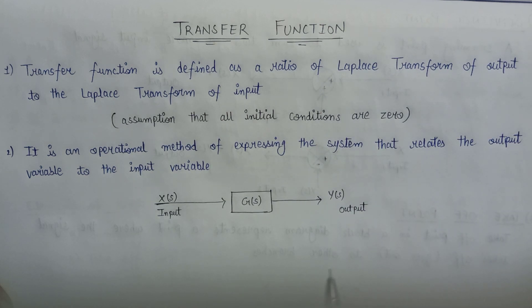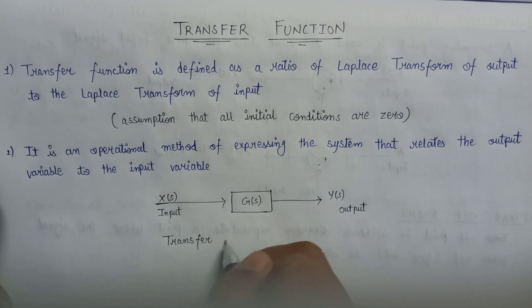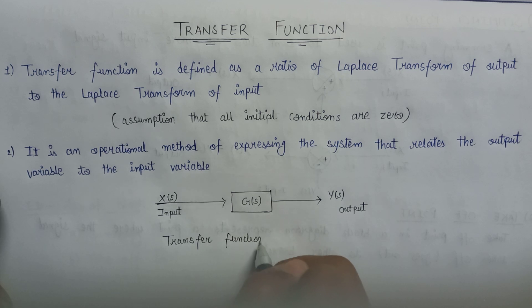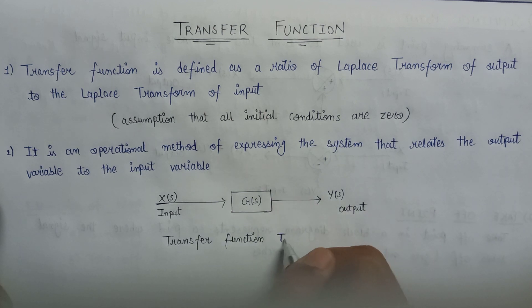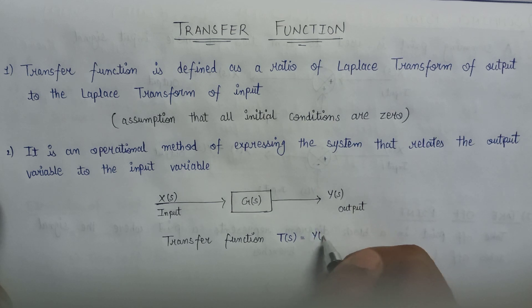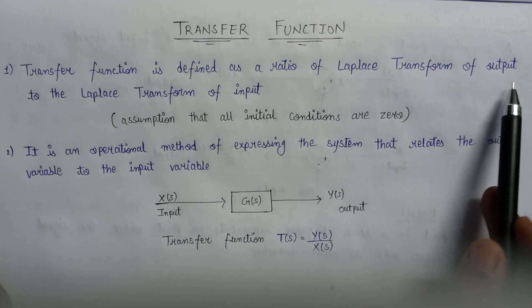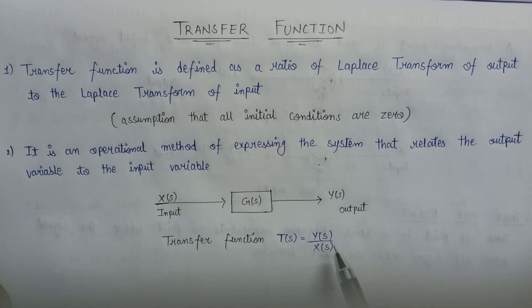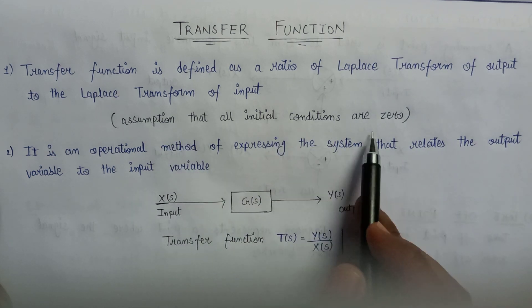The transfer function is represented by T(s), and T(s) is equal to Y(s) over X(s). Since the transfer function is the ratio of the Laplace transform of the output to the Laplace transform of the input, Y(s) is the Laplace transform of the output and X(s) is the Laplace transform of the input. All initial conditions are assumed to be zero.